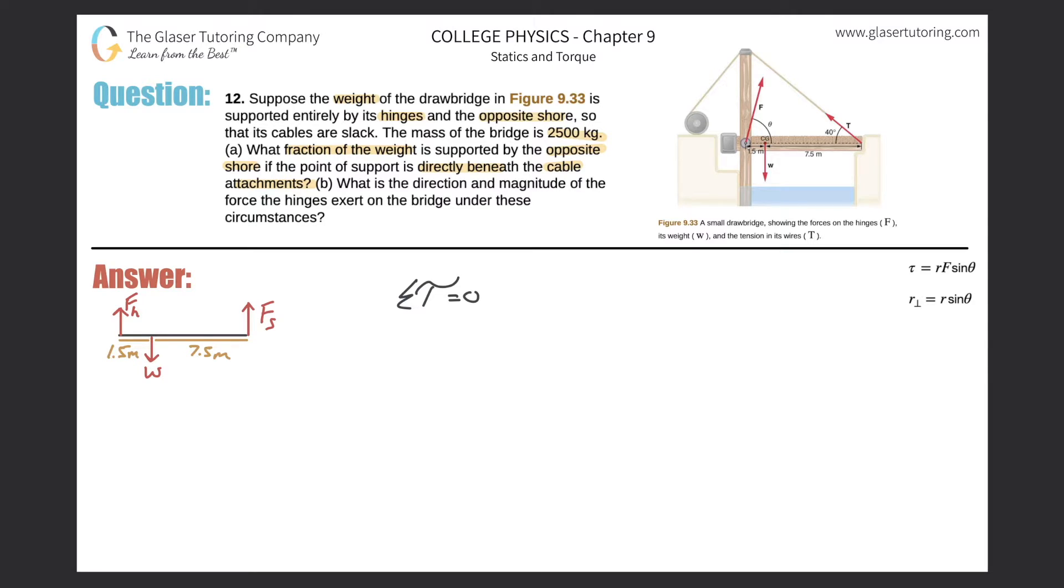axis of rotation somewhere along this black rigid bar. Now, you can basically choose anywhere you want, but one particular location will be better than most others because it will make our problem solving a lot easier. So what I'm going to do is I'm going to choose the axis of rotation to be right here, where I'm dotting it.